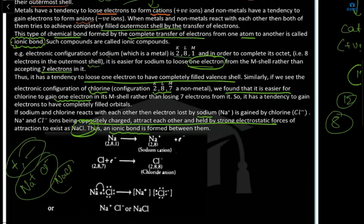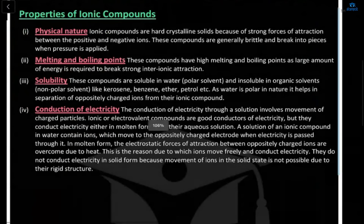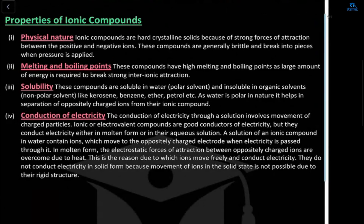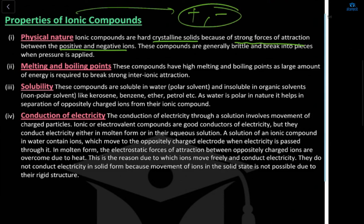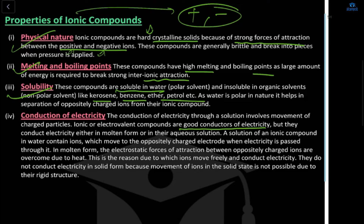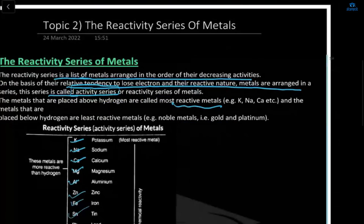Properties of ionic compounds: their physical nature is hard crystalline solid, due to strong forces of attraction between positive and negative ions. Their melting and boiling points are very high because of this inter-ionic attraction. These compounds are soluble in water but insoluble in organic solvents like kerosene and benzene. They are good conductors of electricity because conduction involves movement of charged particles.